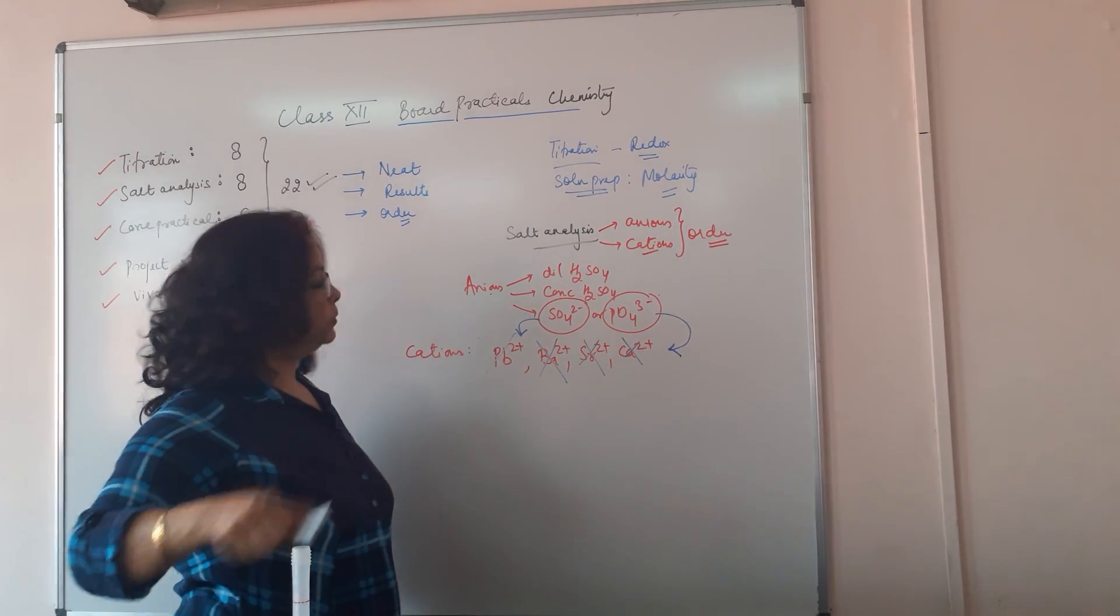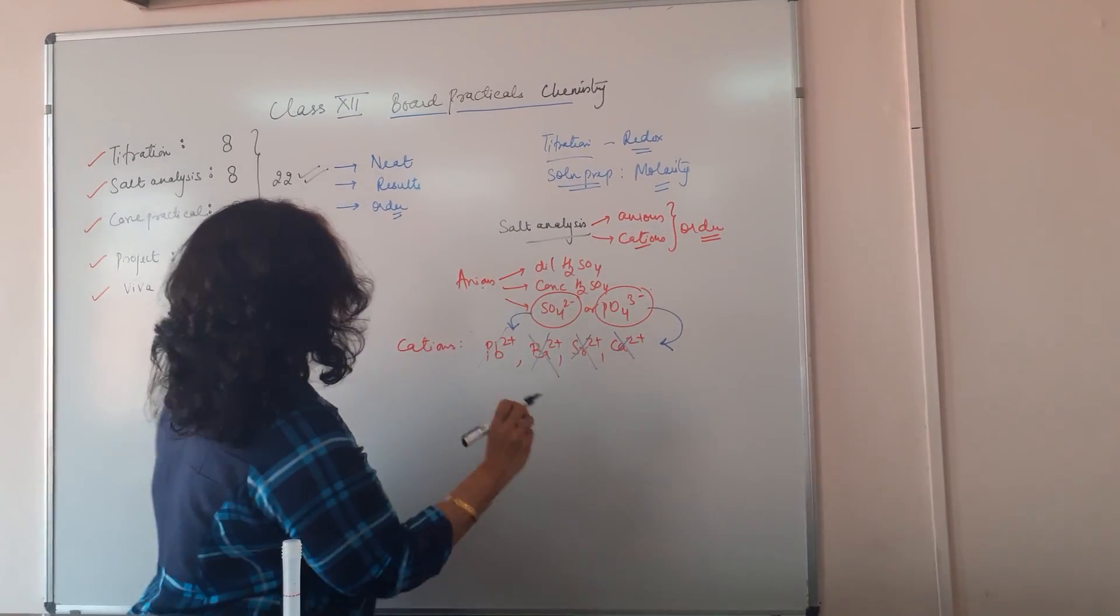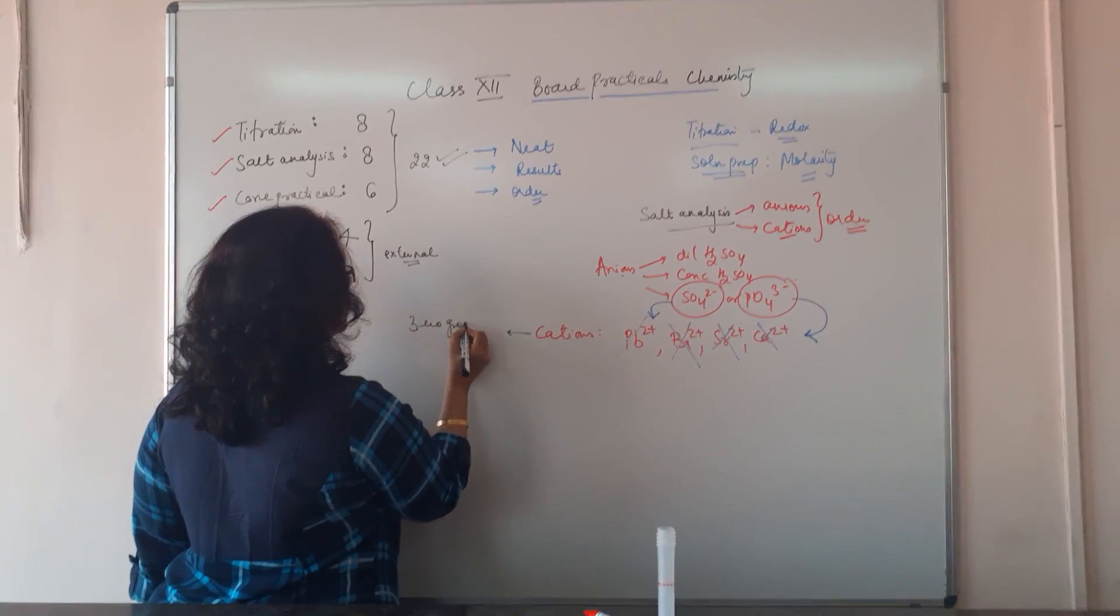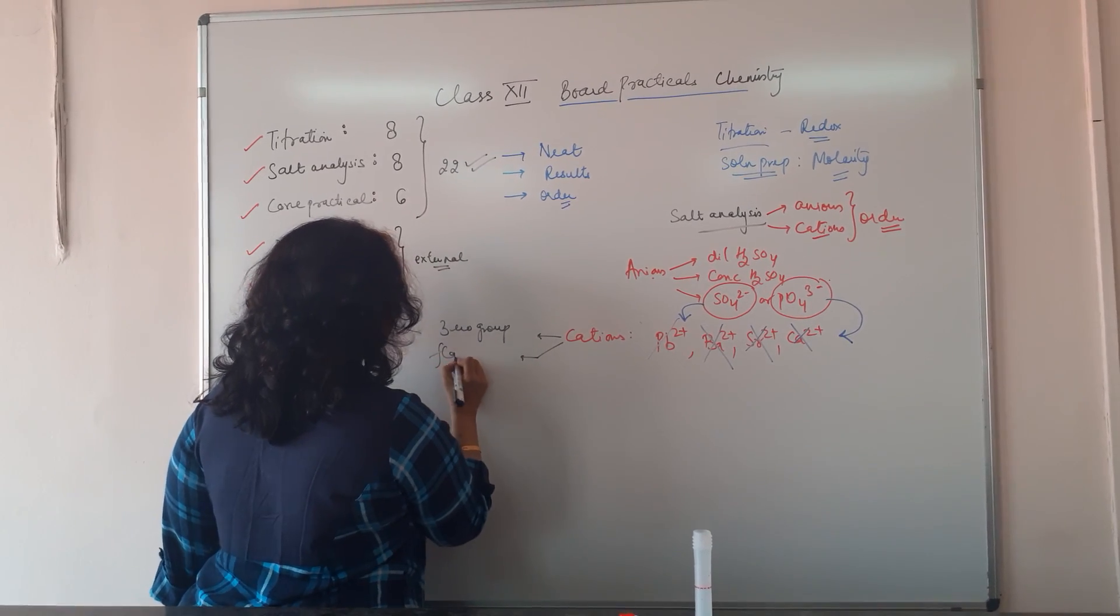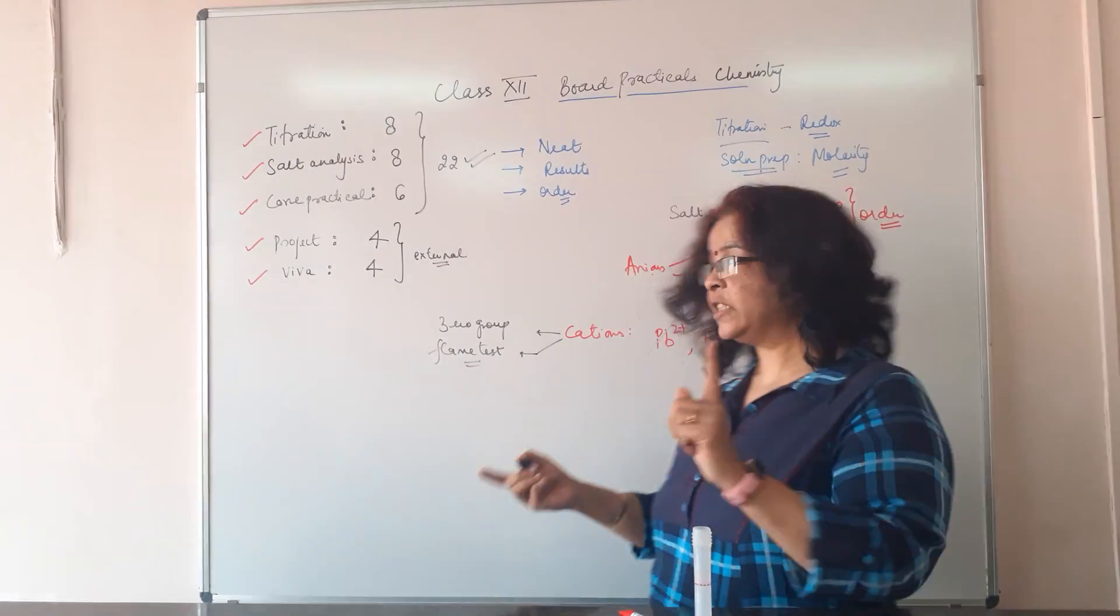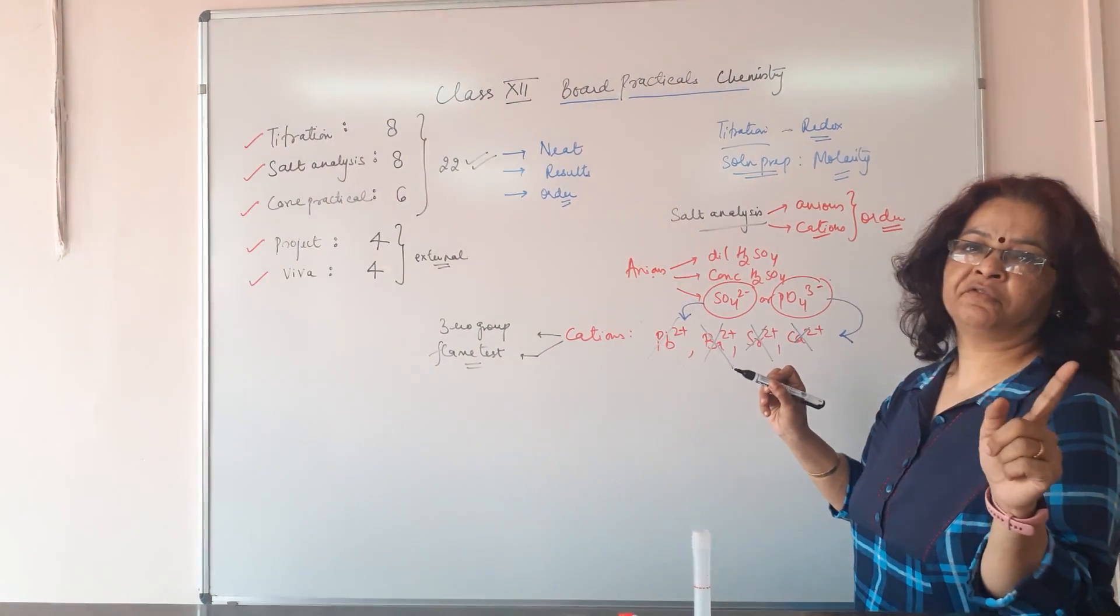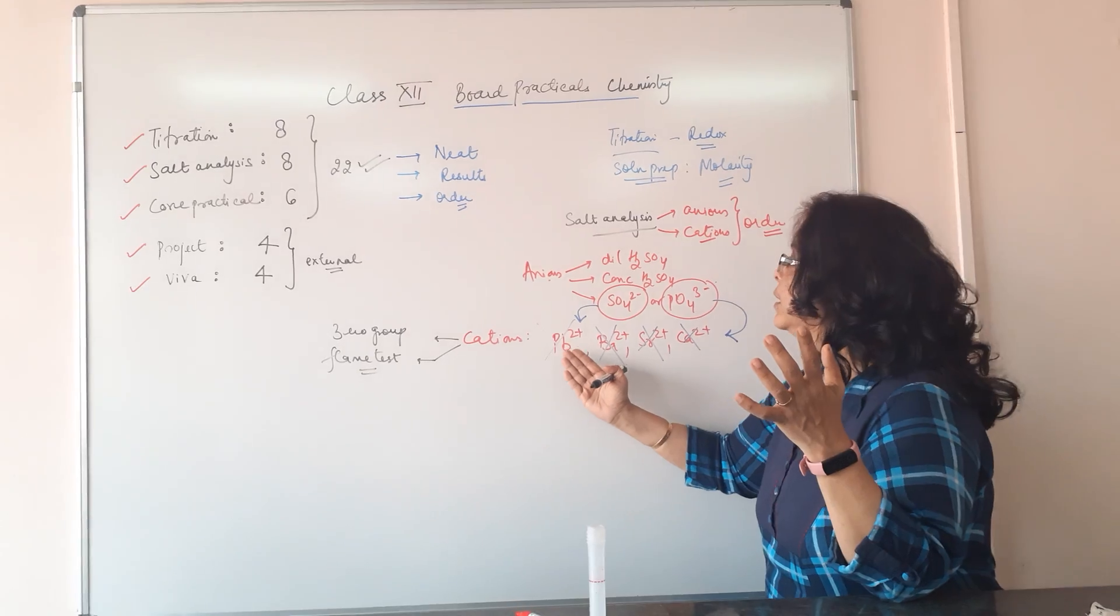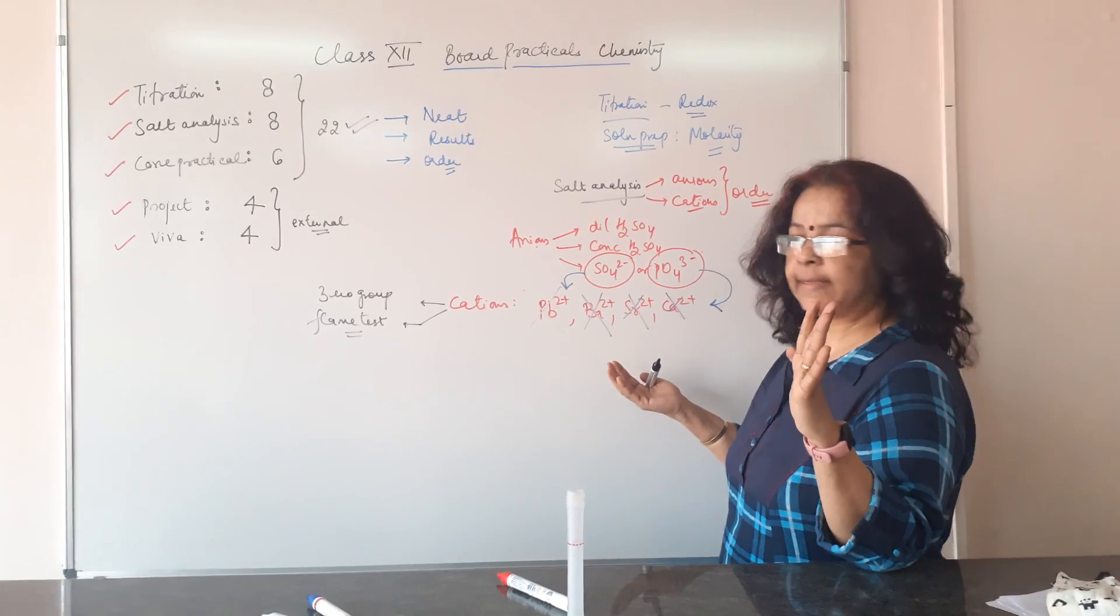If your anion is sulfate or phosphate. Also, which means if sulfate and phosphate are not there, then I would advise in the cations, you start with the zero group which is your ammonium testing followed by flame test. So that you can quickly identify the group 5. But please do the flame test only if your salt does not have sulfate or phosphate. If the salt has sulfate or phosphate, then group 1 and group 5 will be absent. You should know that. Is that fine?